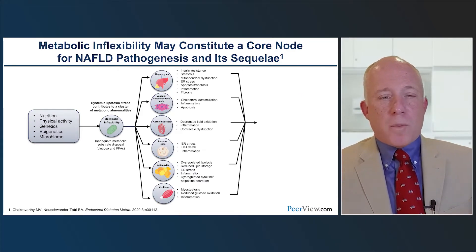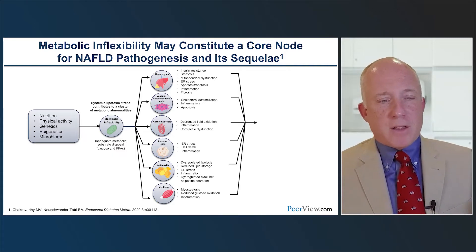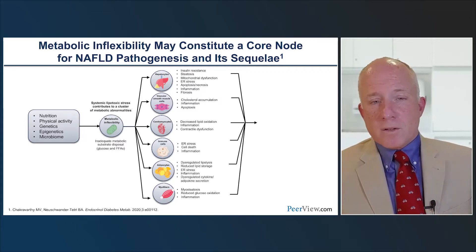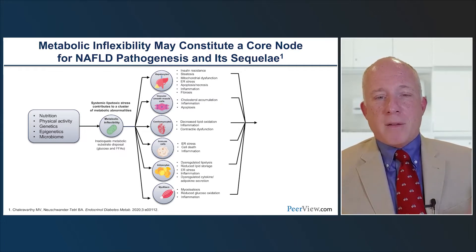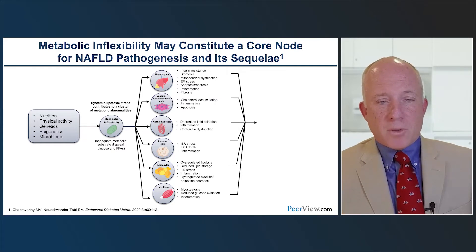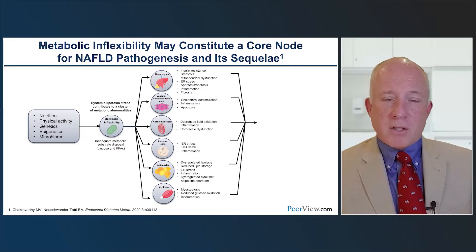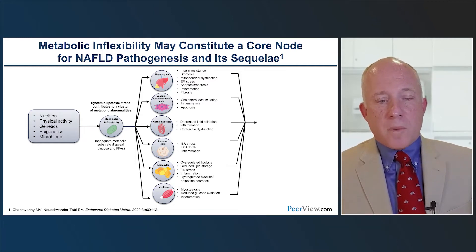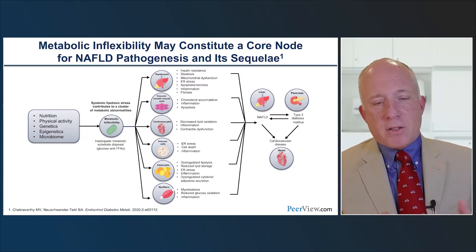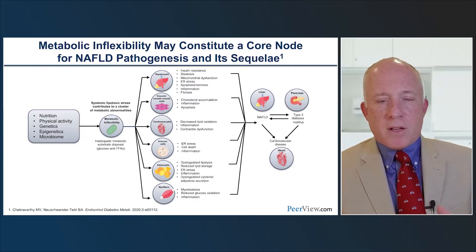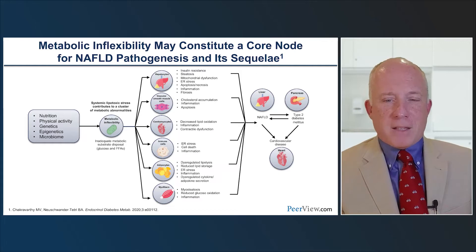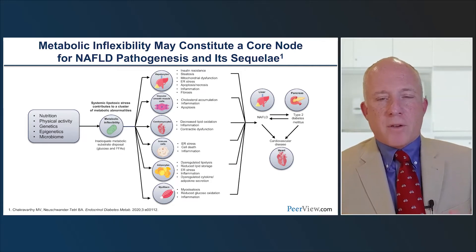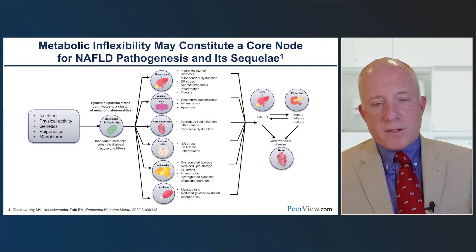Taking a whole-body approach: genetic, dietary, and physical activity components drive metabolic inflexibility, which affects the organs — steatosis and inflammation and fibrosis in the liver; atherosclerosis along the vascular beds; decreased lipid oxidation affecting cardiac contractile function; and cellular apoptosis. These conditions — diabetes, fatty liver disease, and cardiovascular disease — all feed on each other from that same metabolic inflexibility.